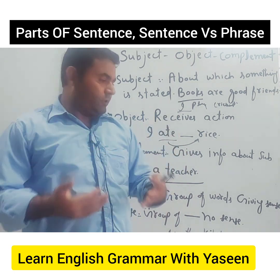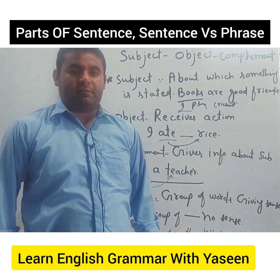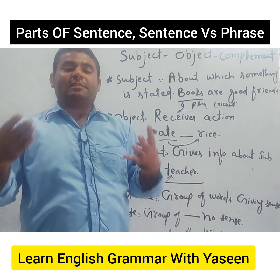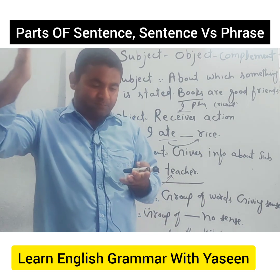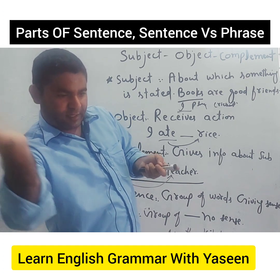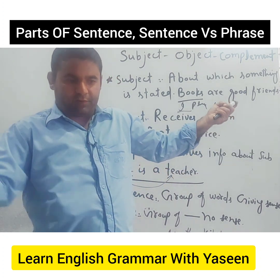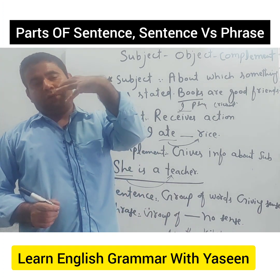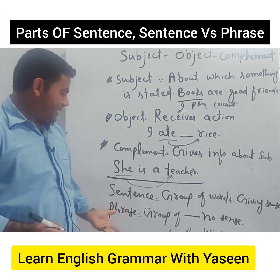But grammatically, when you use 'in the kitchen' or 'after evening,' these kinds of words don't make a complete sense. When a group of words doesn't make a complete sense, it is called a phrase. But when there is a complete sense — for example, we put a subject and also use a predicate, and in the predicate there must be a verb — when there is a subject and a verb, it will make a complete sense.